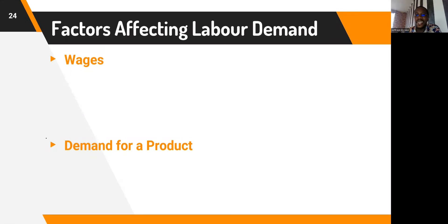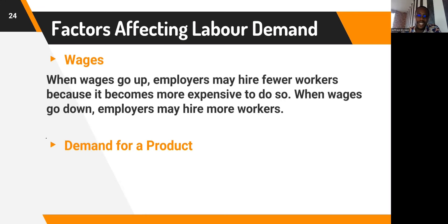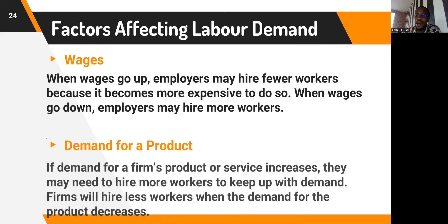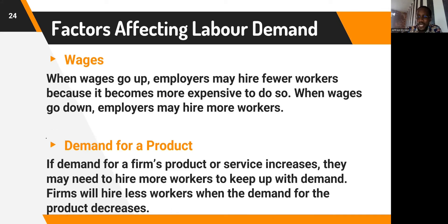What are the factors that affect the demand for labor? First, wages: there is a negative relationship between wages and workers employed. When wages go up, it becomes more expensive to hire workers, so firms hire fewer. When wages go down, labor becomes relatively cheaper and firms hire more. Second, demand for a product: if demand for a firm's output increases, the firm hires more workers to meet that demand. If demand decreases, firms reduce or lay off workers.